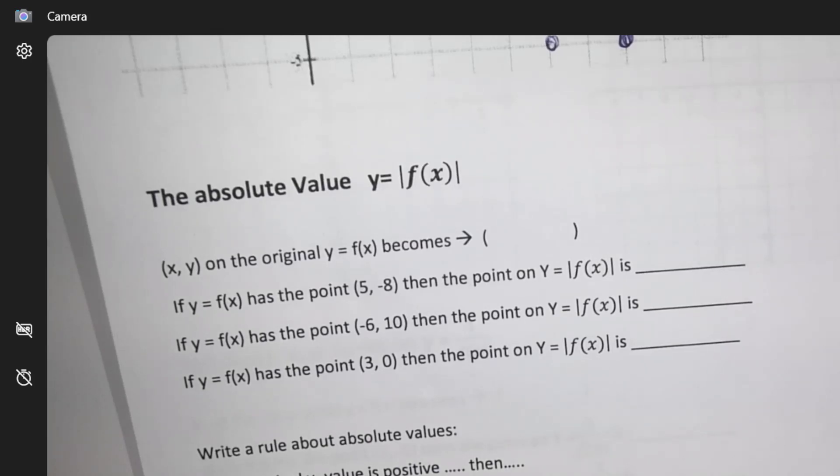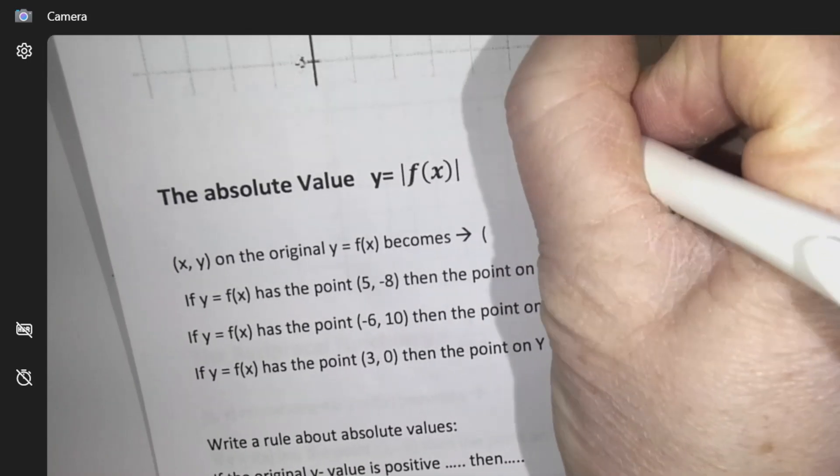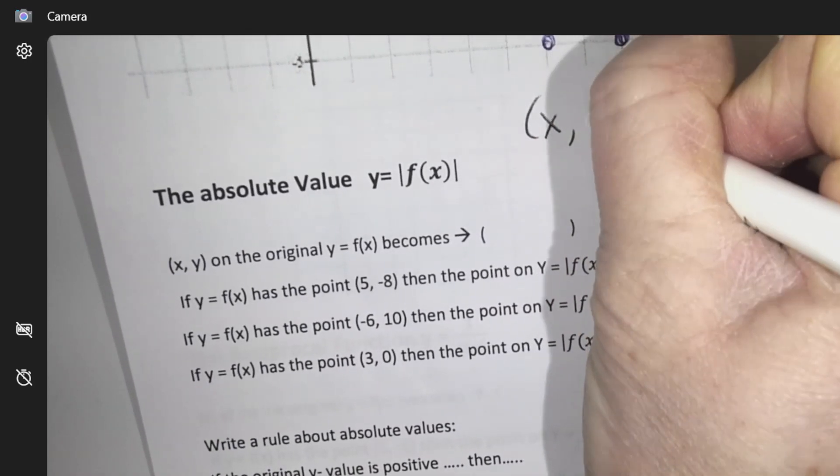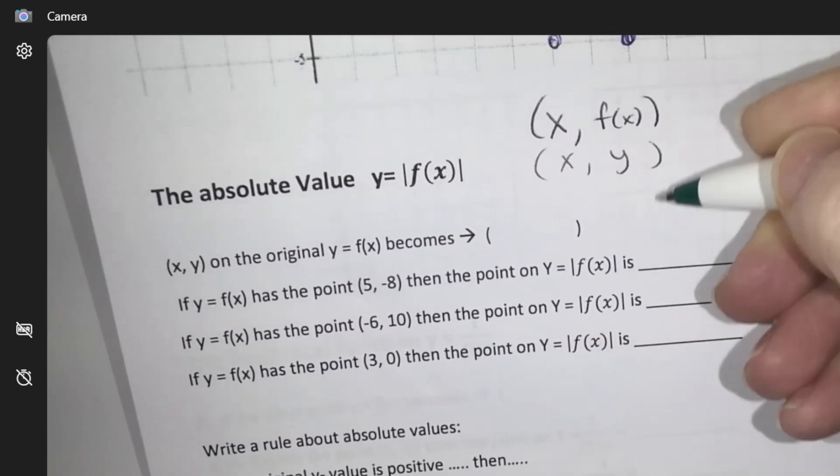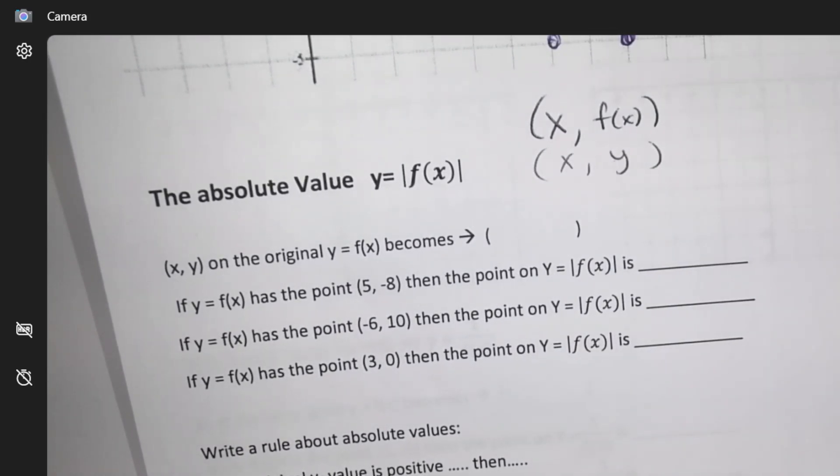Does everybody understand f of x is kind of a fancy way of saying y? Each coordinate would be called x comma f of x, or x comma y. That's what it means, just a fancy way of saying it.